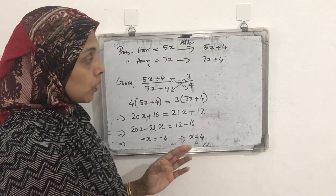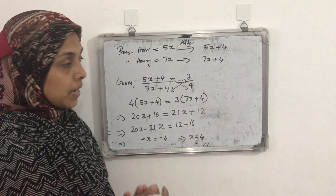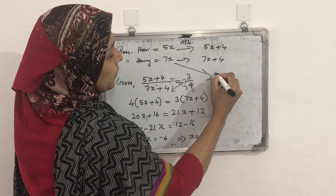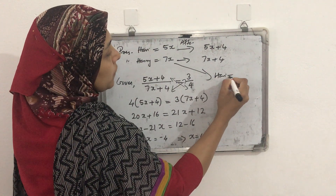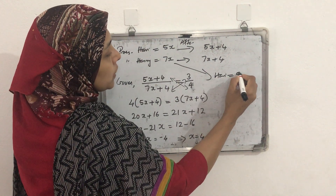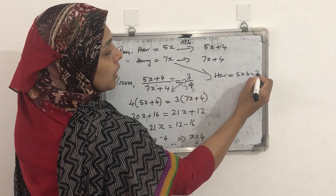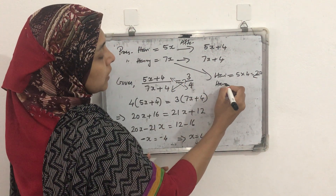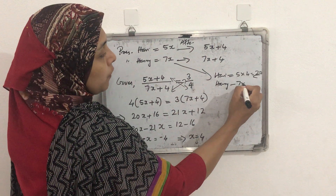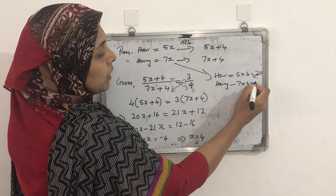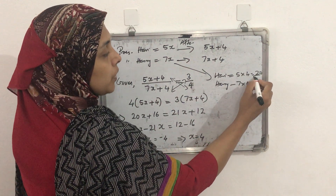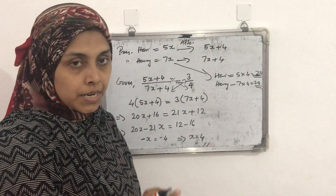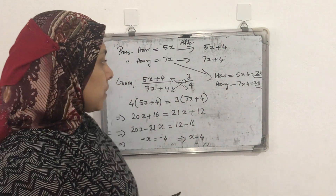This implies x = 4. So we can find out the present ages. Therefore, present age of Hari is 5 × 4 = 20. And the second Hari's present age is 7 × 4 = 28. So 20 and 28 are their present ages. It is simple.